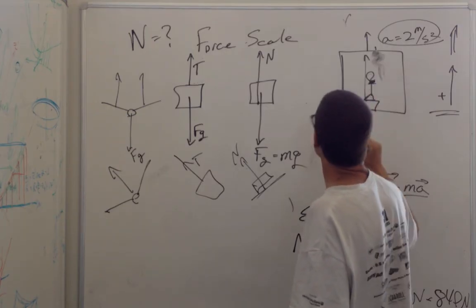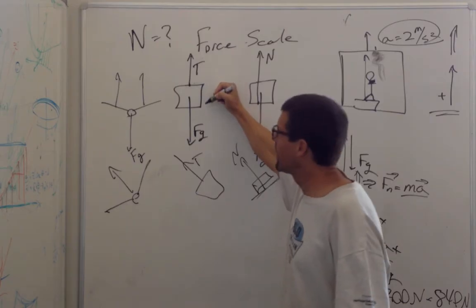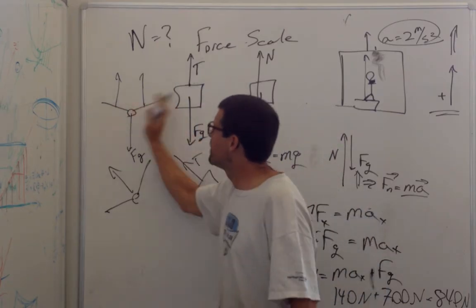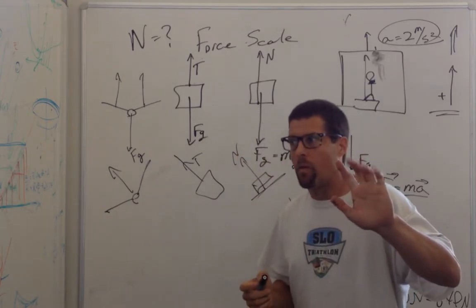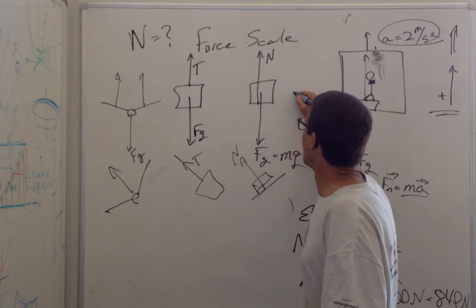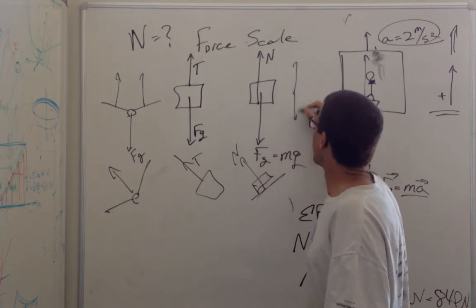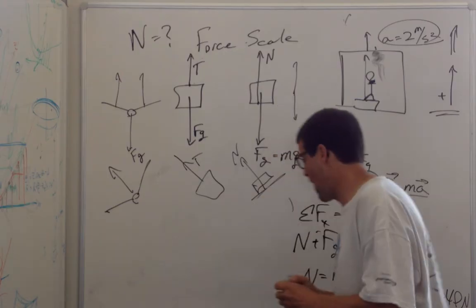The other thing I like to say is that you'll notice that I draw the forces from where they act. Here the force is acting on your feet. Here the tension would be from the top of the elevator. Here the lift would be from the wings. If you look in physics books, they always draw them from the center point. This is a really bad idea in my opinion.